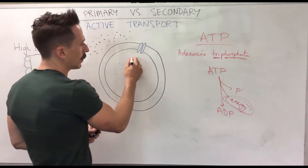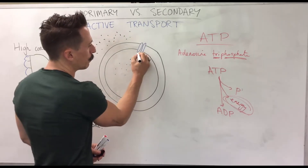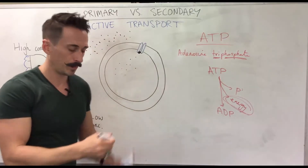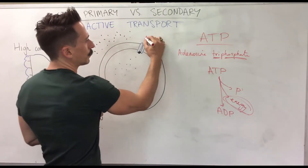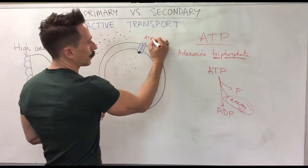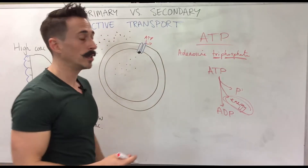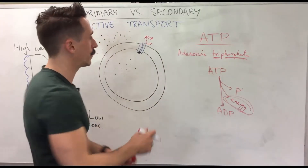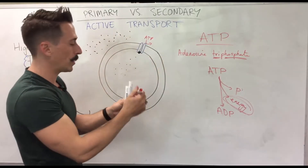The pumps will take these solutes. The solutes will usually bind into an area of that pump. ATP comes along and gives that pump energy in the form of releasing a phosphate, and the pump changes its shape and opens up.